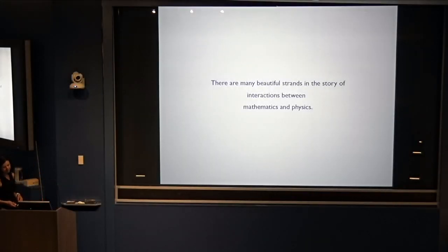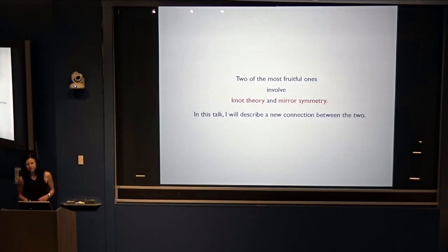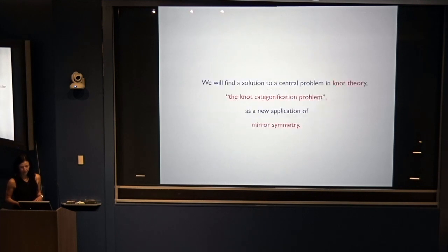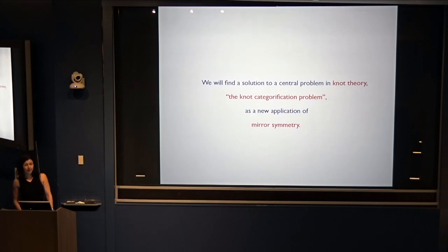There are many beautiful strands in the story of math and physics. Two of the most fruitful ones involve knot theory and mirror symmetry. In this talk, I'll describe a new connection between the two. We'll find a solution to a central problem in knot theory, called the knot categorification problem, as a new application of mirror symmetry.